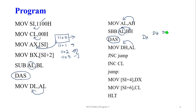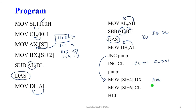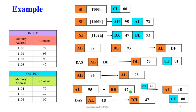Now the DX register contains the full result — DH holds the high byte and DL the low byte. Check the carry flag: if set, increment the CL register (initially 00); if carry becomes 1, CL is incremented by 1. Otherwise, jump to store: the DX value is moved to memory location 1104, and the CL borrow value is moved to 1106. Finally, terminate the program.